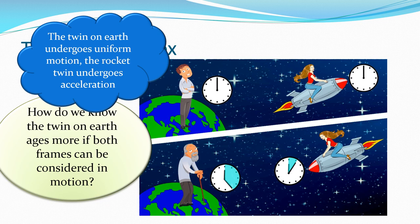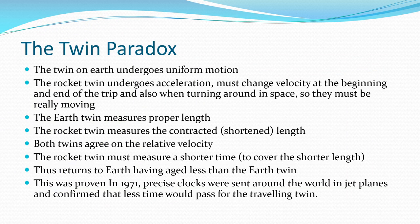The twin on Earth undergoes uniform motion; the twin on the rocket undergoes acceleration. That's how we know they are the one moving — it's not Earth moving away from them, it's them moving away from Earth. The twin on Earth undergoes uniform motion; the rocket twin must change velocity at the beginning, end, and when turning around. Hence the rocket twin has proper time, and the Earth has the dilated time. Earth twin measures proper length; rocket twin measures the contracted relativistic length. Both twins agree on relative velocity.